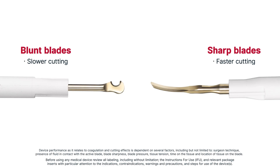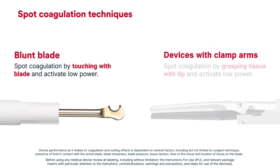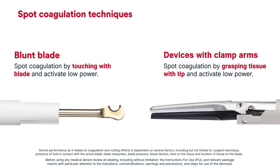Blade sharpness. Blade sharpness and geometry impact the cutting and coagulation effects. Sharper blades cut faster than flatter or more blunt instruments. Both sharp and blunt blades can perform spot coagulation with the correct technique. Flat or blunt blades can spot coagulate small bleeders by touching the tissue and activating on a low power setting. To spot coagulate with ultrasonic shears, the surgeon can grasp the area with the tip and activate on a low power setting.